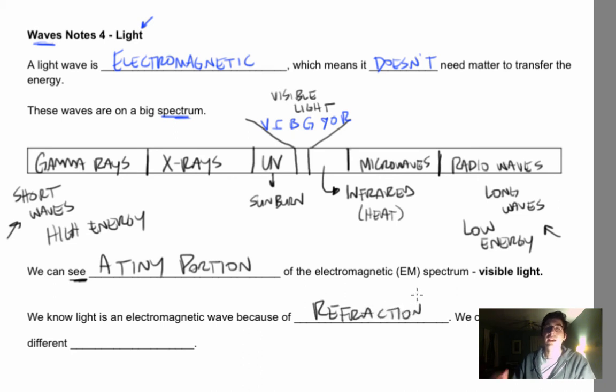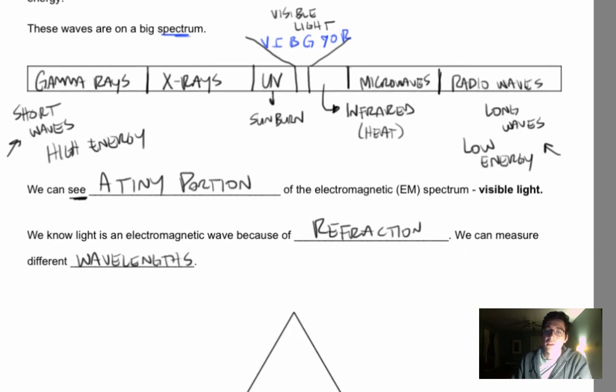So I can split light into its individual pieces using something called a prism. And we can measure different wavelengths of light. So really, visible light is a combination of all of these colors. So the white light coming from my lamp right now is a combination of red, orange, yellow, green, blue, indigo, and violet wavelengths of light.